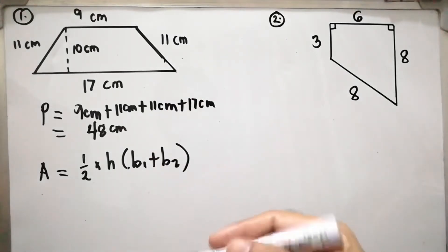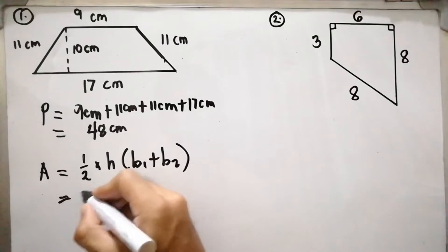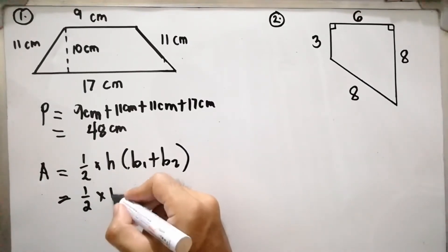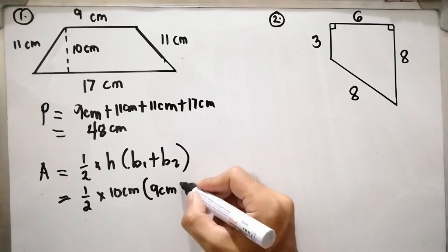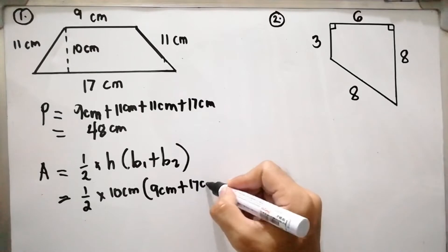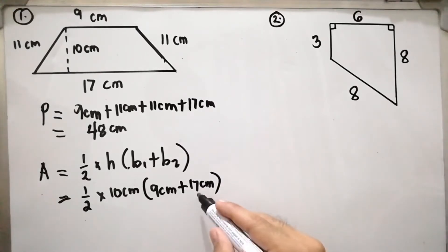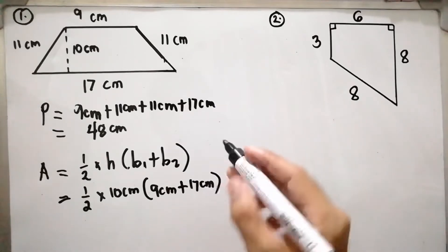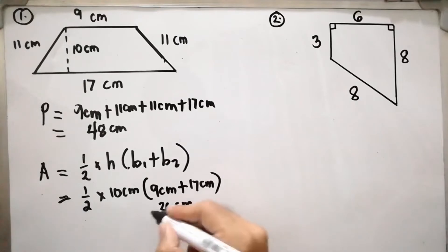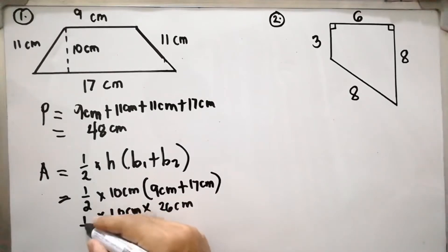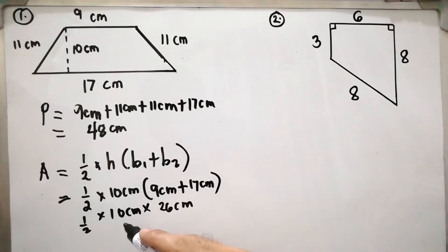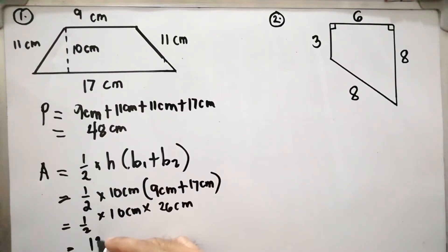Substituting into the formula: A equals one-half times 10 centimeters times the quantity of 9 centimeters plus 17 centimeters. So 9 plus 17 equals 26 centimeters, times 10 centimeters, times one-half. That gives us 260 square centimeters times one-half, which equals 130 square centimeters.